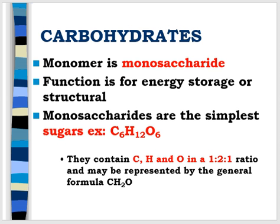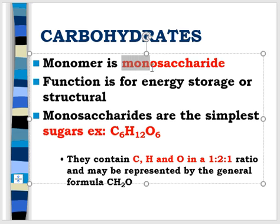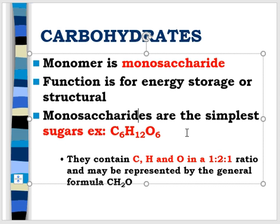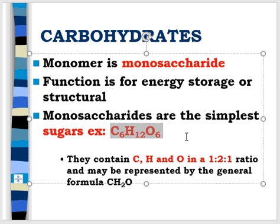Here's an example of what carbohydrates are made up of. Monosaccharides are single sugars — the prefix mono means one, and saccharide refers to sugars. Their functional uses are for energy storage and structure. They have the chemical formula C6H12O6, which are the simplest sugars. They have a ratio of carbon to hydrogen to oxygen of 1 to 2 to 1.